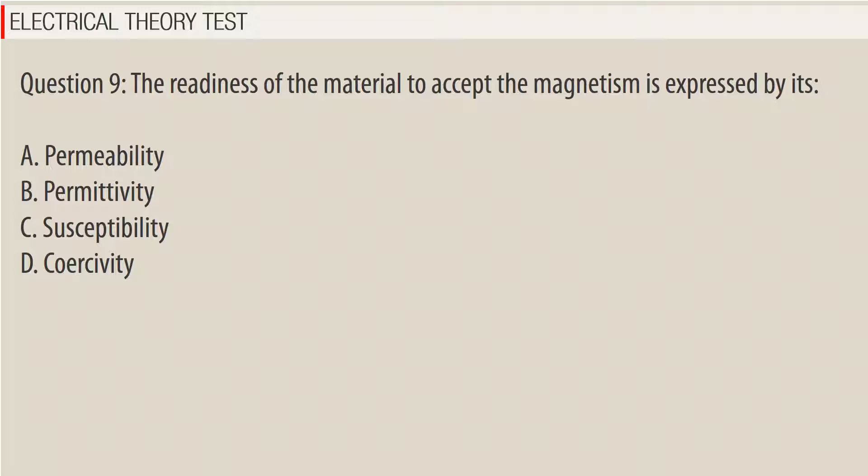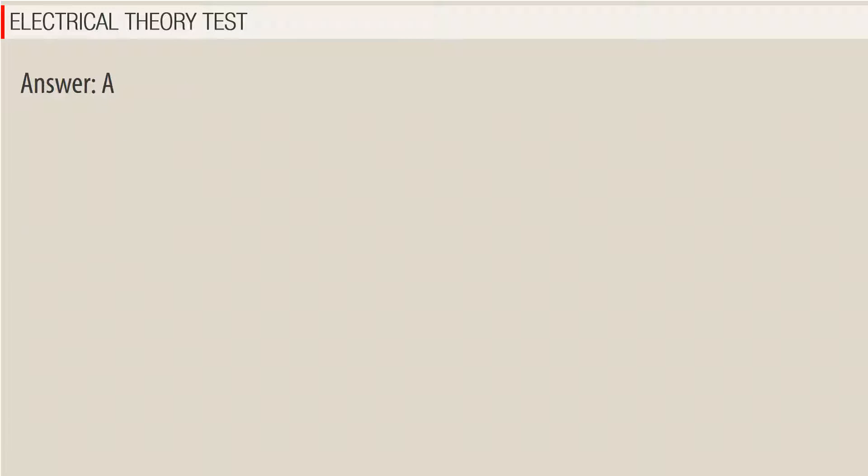Question 9. The readiness of the material to accept the magnetism is expressed by its? a. Permeability. b. Permittivity. c. Susceptibility. d. Coercivity. Answer: A.